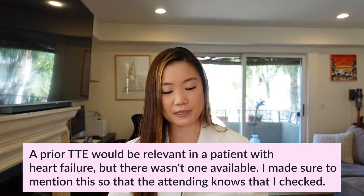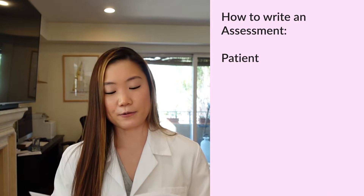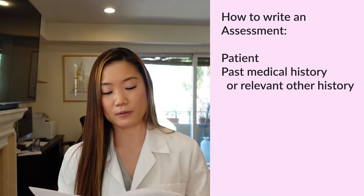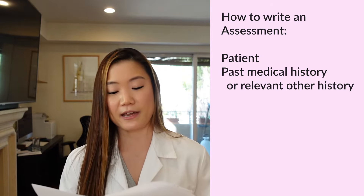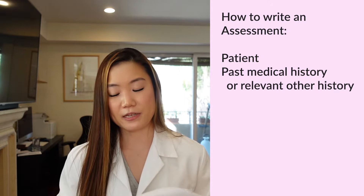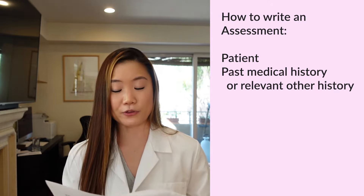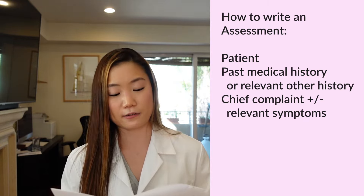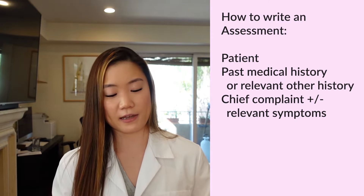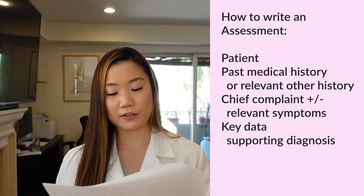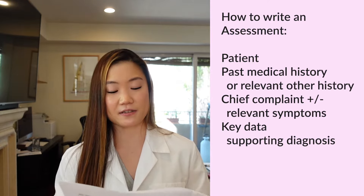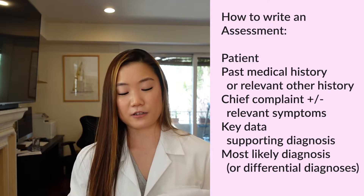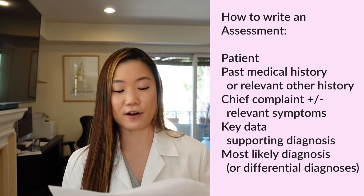Assessment and plan: Ms. Y is a 62-year-old female with paroxysmal afib on anticoagulation, rheumatic fever with mitral stenosis, status post balloon valvuloplasty eight months ago, mild COPD, OSA on CPAP, and hypothyroidism, presenting with progressive shortness of breath, decreased exercise tolerance, bilateral leg swelling, and a 15-pound weight gain over two months. Found to have atrial flutter with RVR, physical exam findings consistent with volume overload, elevated BNP, and vascular congestion on chest X-ray — altogether concerning for acute decompensated heart failure.